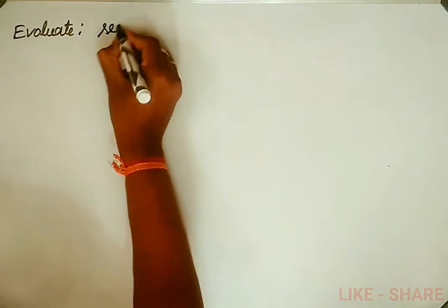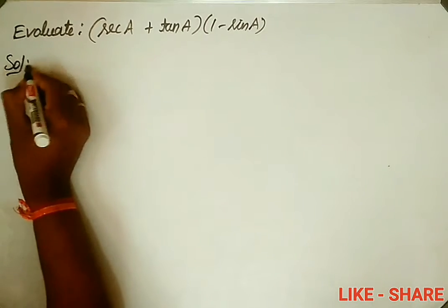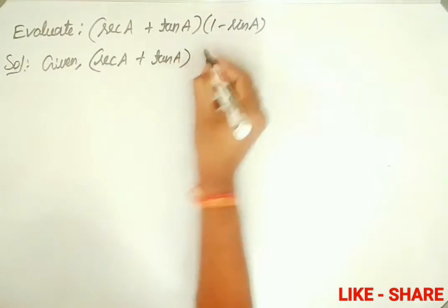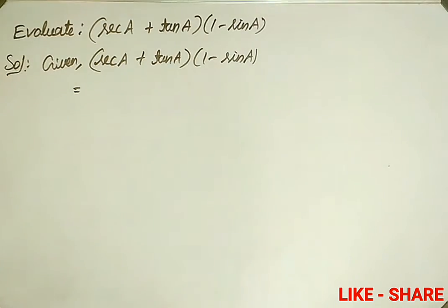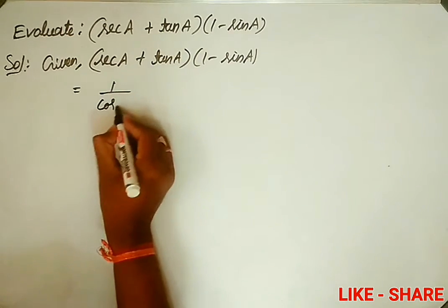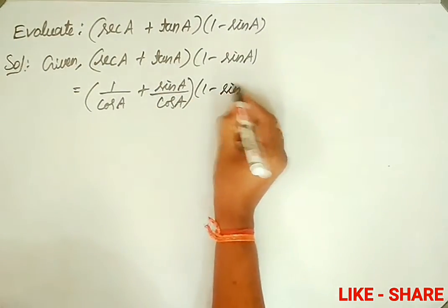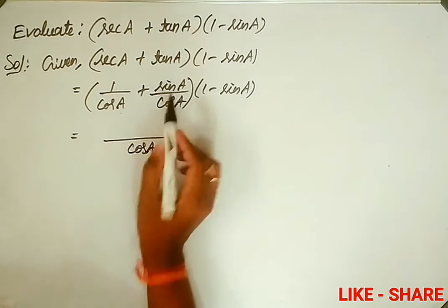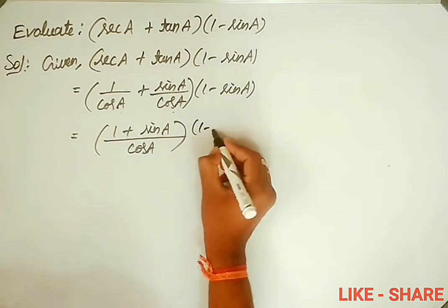See the next problem: evaluate (secant a plus tan a) into (1 minus sin a). In the solution, take the given as it is. We convert secant and tan in terms of sin and cos: secant a written as 1 over cos a, plus tan a written as sin a over cos a, into (1 minus sin a). Taking cos a as the common denominator, in the numerator we write (1 plus sin a), into (1 minus sin a).